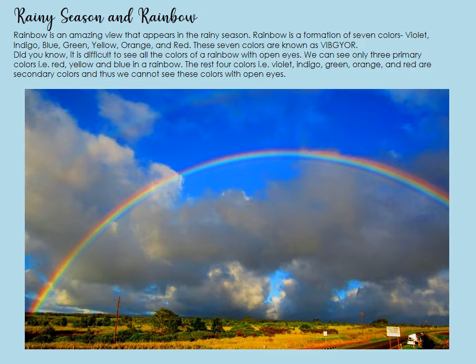Did you know it is difficult to see all the colors of a rainbow with the naked eye? We can only see the three primary colors — red, yellow, and blue — in a rainbow. The rest four colors, violet, indigo, green, and orange, are secondary colors, and thus we cannot see these colors with our open eyes.